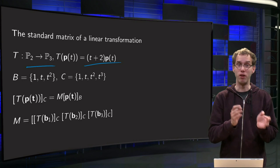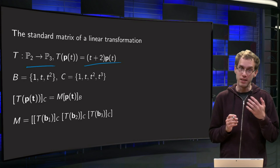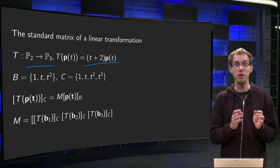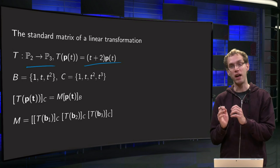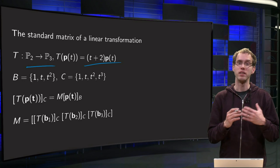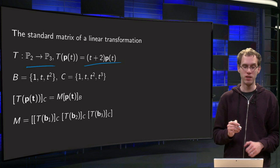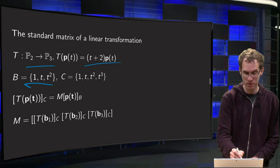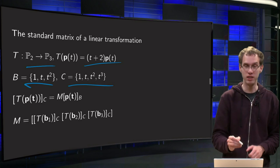Then we need the basis for P2 and for P3. In this particular example we take the standard basis both for P2 and for P3. It is easiest to do computations with. So B equals {1, t, t²} and C equals {1, t, t², t³}.